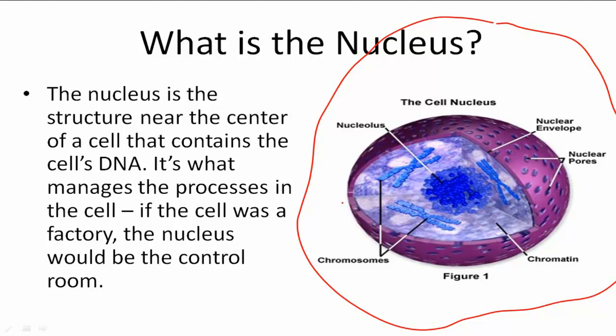So the nucleus tells all of the different organelles inside of a cell what they need to do. And it also holds the DNA in these structures called chromosomes. So it tells the cell what it should look like.